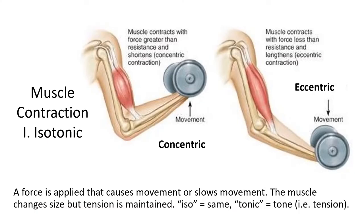Broadly speaking, we have two types of muscle contraction: isotonic contractions and isometric contractions. Let's start with isotonic contractions. Iso means the same, and tonic refers to the tone or tension within a muscle. In an isotonic contraction, the amount of force or tension generated by the muscle stays the same despite the fact that the muscle may change its size — it may become shorter or longer. We have two types of isotonic contractions based on how the shape of the muscle changes.